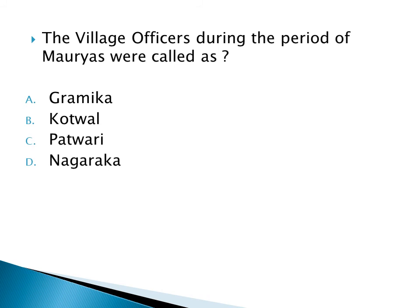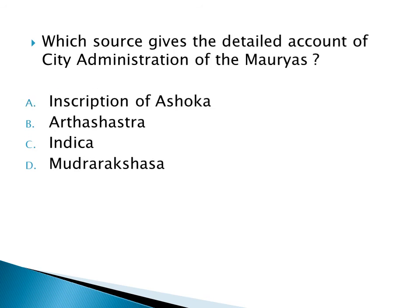The village officers during the Mauryan period were called: Option A: Gramica, Option B: Kotwal, Option C: Patwari, Option D: Nagaraka. The right answer is Option A: Gramica.